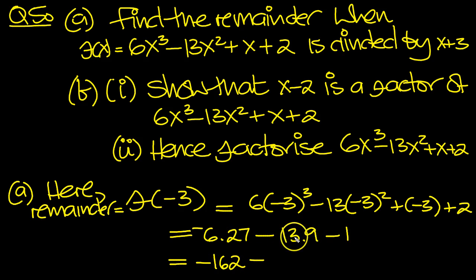9 10s are 90, 9 3s are 27. 90 and 27, 117, minus 1. So it's minus 162, minus 117, minus 1. Minus 280 is the remainder.